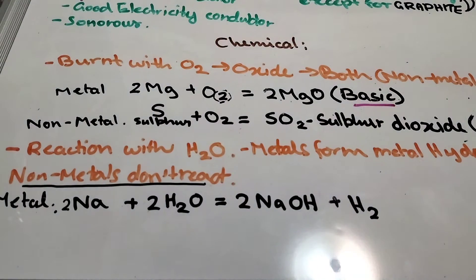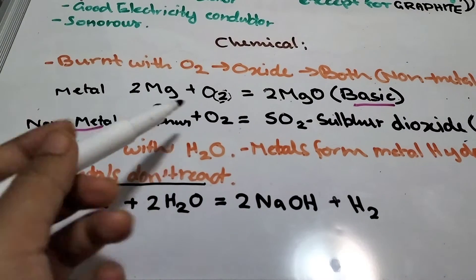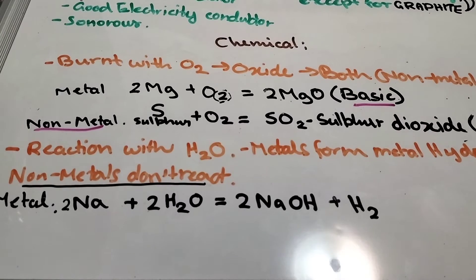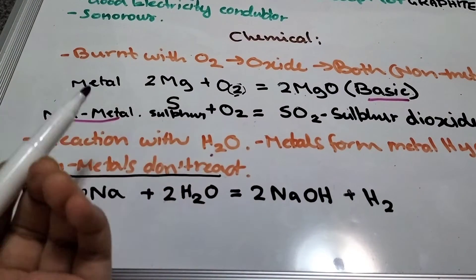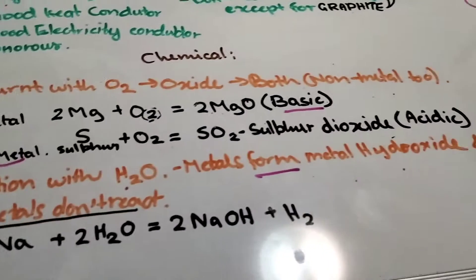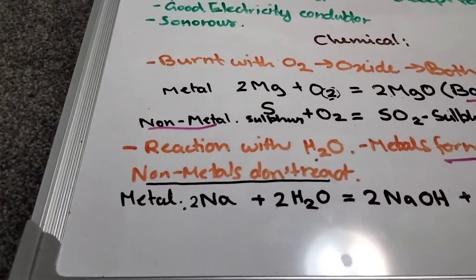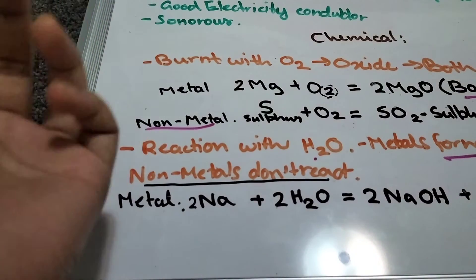When you mix metals with oxygen, they form a metal oxide, which is basic in nature — we learned about bases and acids in class seven. For non-metals: sulfur (S) + O₂ = SO₂ (sulfur dioxide), which is acidic in nature. For reaction with water: metals form metal hydroxide and hydrogen gas, while non-metals don't react with water.